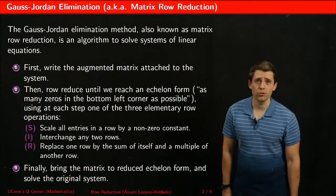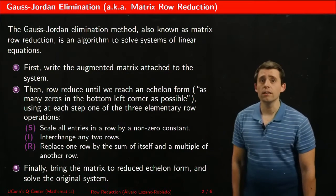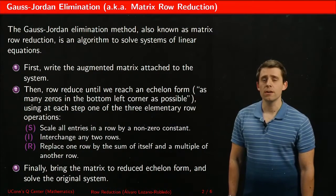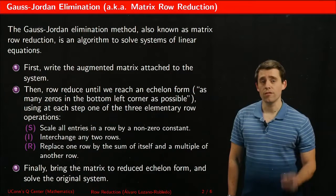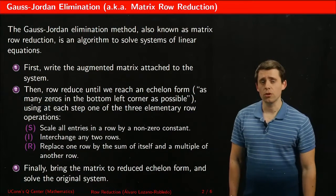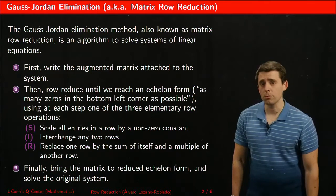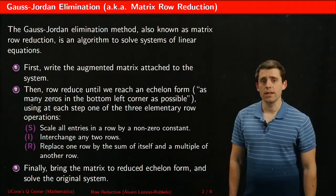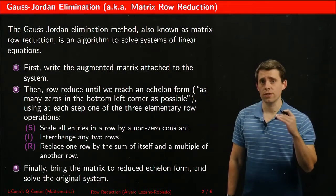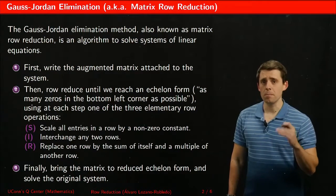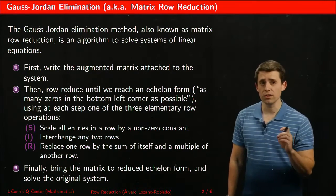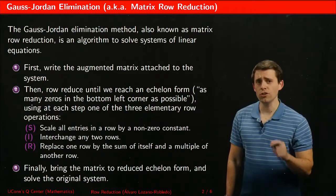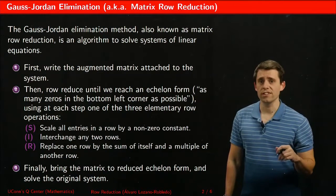This method is used to solve large systems of linear equations, and it's a very efficient method. We first transform the linear system into what's called the augmented matrix, and then we move on to reducing the augmented matrix using this row reduction method to simplify the system to a point where we can decide if the system is consistent — that is, if there are solutions — and also to solve the system if solutions exist.